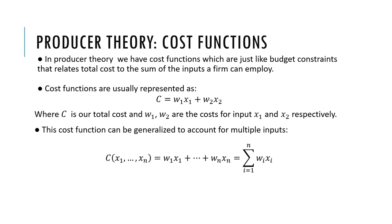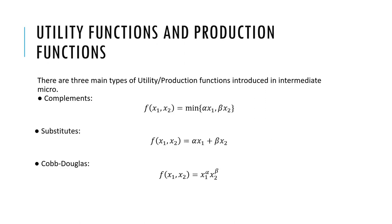Cost functions can be generalized to account for multiple inputs, where C equals the summation of Wi·Xi where i goes from one to n. There are also three main utility and production functions introduced in intermediate micro.